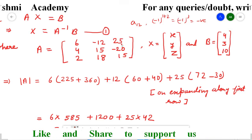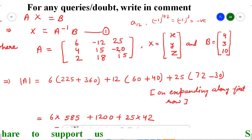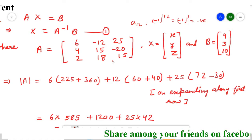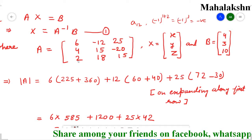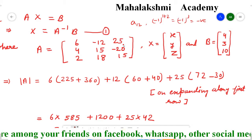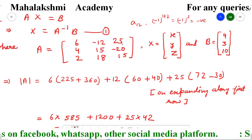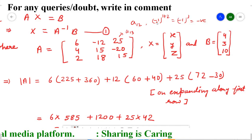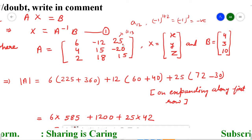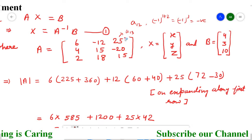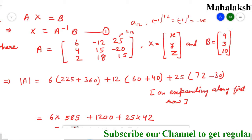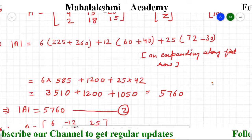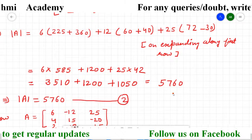We cross this column and row, leaving 4, 2, minus 20, and 15. So 4 × 15 = 60 and the minus of the formula with this minus becomes positive, then 20 × 2 = 40. The next position is A13, and 1 + 3 = 4, so (−1)^4 is positive — meaning the 25 is positive. Crossing that, the remaining matrix gives 4 × 18 = 72 minus 15 × 2 = 30. After expanding along the first row and doing the plus/minus arithmetic, the determinant of A is 5760. This is equation 2.